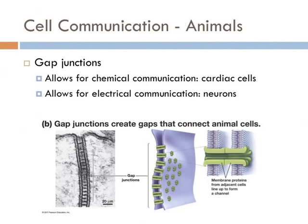A gap junction is a specialized intercellular connection between many different types of animal cells. Intercellular proteins directly connect the cytoplasm of two cells, which allows various molecules and ions to pass freely between cells. Gap junctions allow for chemical communication between cells in animals. They are particularly important in the cardiac muscle — the signal to contract is passed efficiently through gap junctions, allowing the heart muscles to contract and expand in tandem. Gap junctions are expressed in virtually all tissues of the body. In addition to chemical communication, gap junctions also allow for direct electrical communication between neuron cells, known as an electrical synapse.